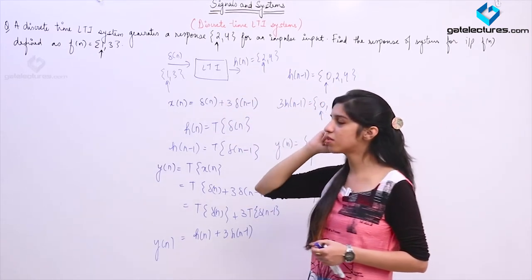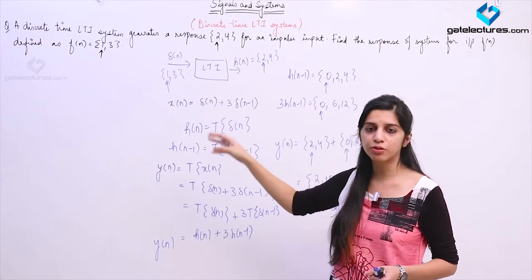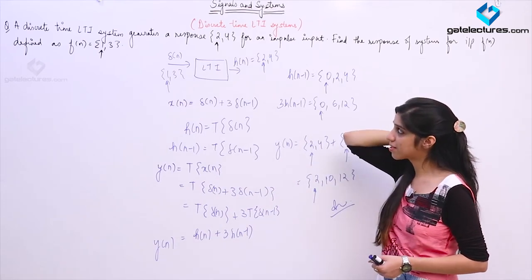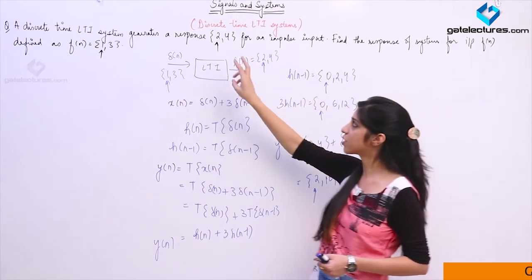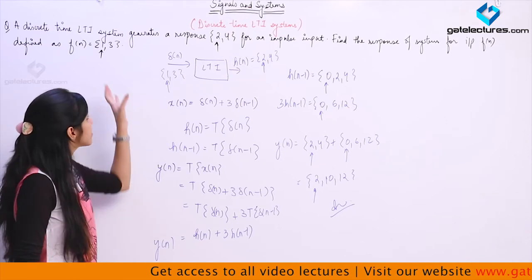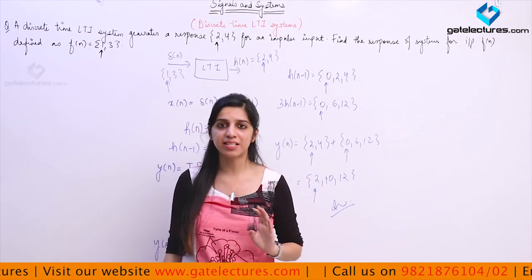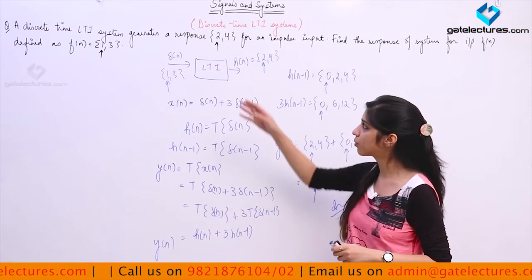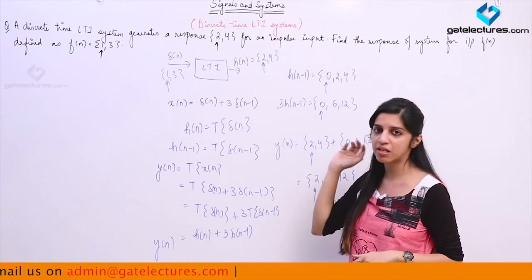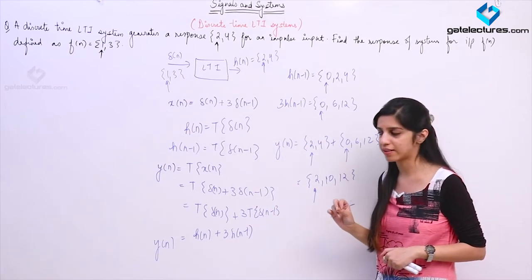So {2, 10, 12} is my response of the system to the given input. If you solve the same question using graphical or analytical convolution, it is going to take much less time. This kind of procedure was comfortable for signals with only two samples each. But if these signals have 6 to 7 samples each, or if they continue till infinity, this procedure is going to take a lot of time or never give the answer.